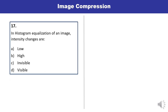Question 17: In histogram equalization of an image, intensity changes are — low, high, invisible, or visible? In histogram equalization, because normalization process takes place, intensity changes are visible. D is the correct answer.